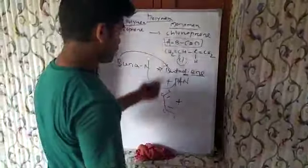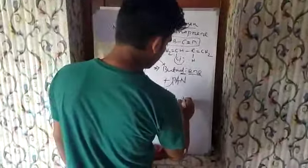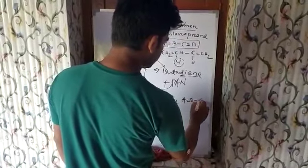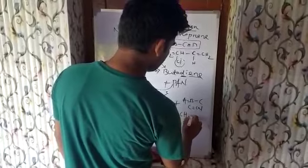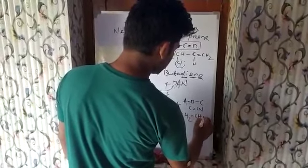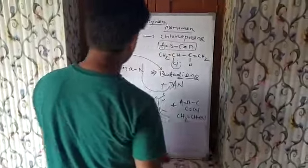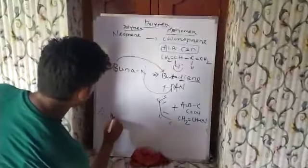And acrylonitrile already discussed. That is A double bond B single bond C, where C is C equals to CN. That means CH2 double bond CH single bond CN. This is Buna N rubber.